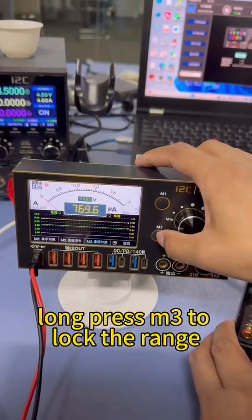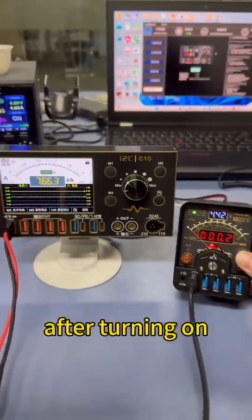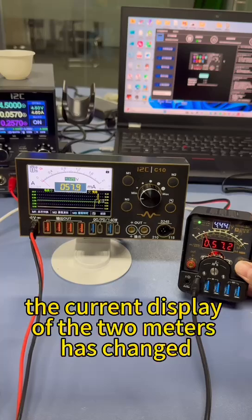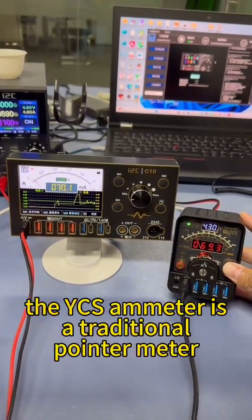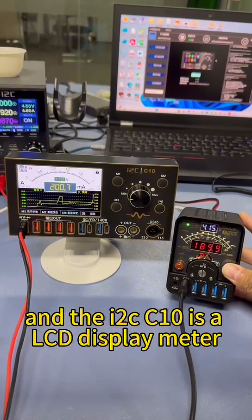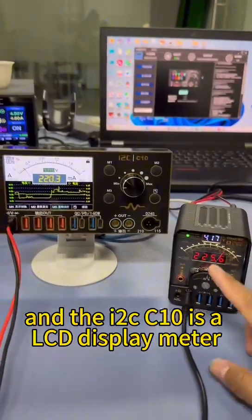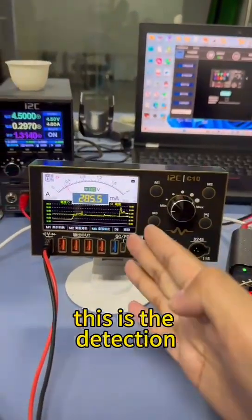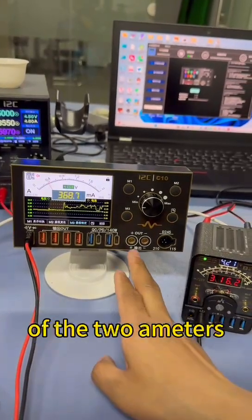Long press M3 to lock the range. Now turn on the phone. After turning on, you can see that the current display of the two meters has changed. The YCS ammeter is a traditional pointer meter, and the I2CC10 is a liquid crystal meter. The display data are normal. This is the detection comparison and connection relationship of the two ammeters.